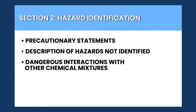Lastly, the Hazard Identification section may include precautionary statements on hazard prevention, response, storage, disposal, and any other hazards the chemical may pose, like dangerous interactions with other chemicals.